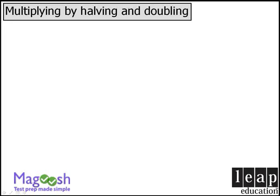In this video, we'll examine a technique that can occasionally save you some time when multiplying two numbers. The premise here is that if we take two numbers in a certain product and double one number and halve the other number, then the product of our two new numbers will be the same as the product of our original numbers.